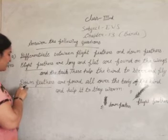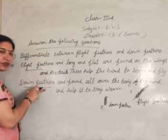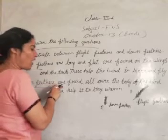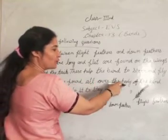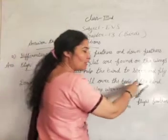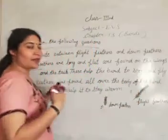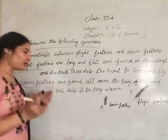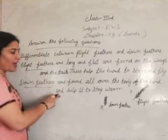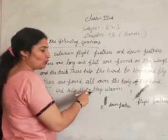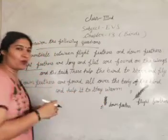Next one is down feathers. Down feathers are found near the body of the bird. They help keep the bird warm and safe.